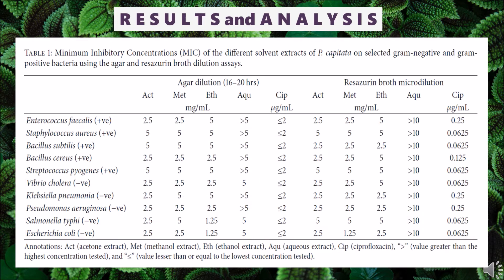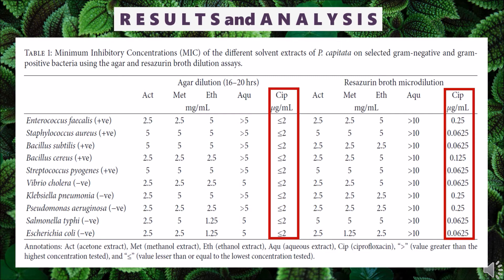Ciprofloxacin, the standard drug, demonstrated great antibacterial activity, having an MIC of less than or equal to 2 micrograms per ml in the agar dilution, while 0.0625 to 0.25 micrograms per ml in the broth microdilution. At this point, it is worth noting that biocompounds of parasitic plants are chiefly dependent on their hosts. Hence, the same parasitic plant may exhibit different antimicrobial activities on different hosts.